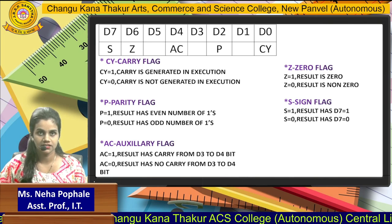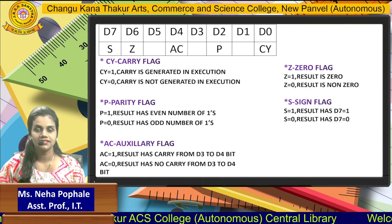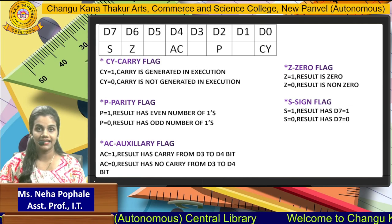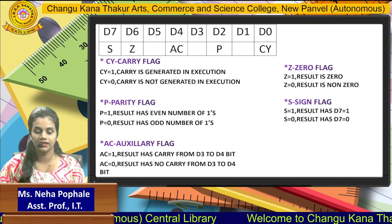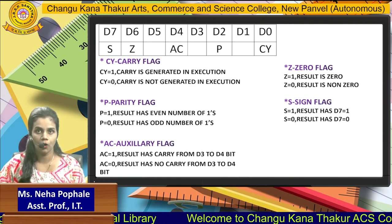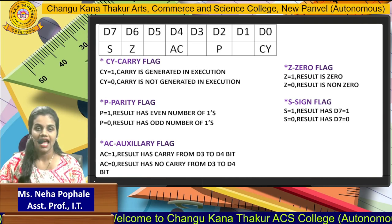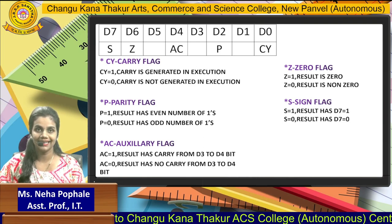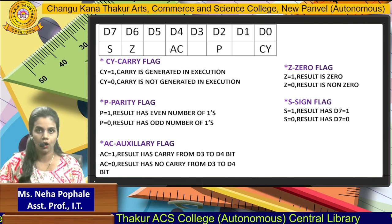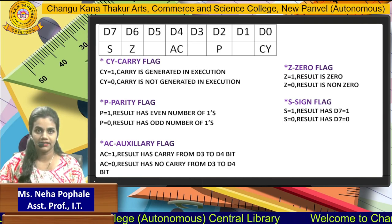Let's start with the first flag, that is the carry flag. The carry flag is set to 1 when there is a carry generated in the execution. When you perform any arithmetic or logical operation, at last when you get a carry, that time the carry flag is set to 1, or it is set to 0.